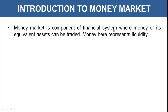Money market is a component of the financial system where money or its equivalent assets can be traded. Money here represents liquidity. The financial system comprises of financial market, and money market is a part of it. There is capital market and there is money market. Money market is generally known for trading in short-term instruments — less than one year — which are cash or cash-related instruments readily convertible into cash due to their short-term maturity.